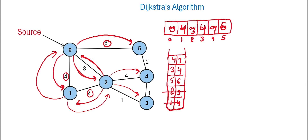Next, we pick node 3 with minimum distance 4 from the priority queue. From node 3, we can move to 2 and 4. Moving to 2 gives distance 5, which is more than the current distance of 3, so we ignore it. Moving from 3 to 4 gives distance 5, which is lower than the current distance of 7, so we update the distance and insert node 4 with distance 5 into the priority queue.